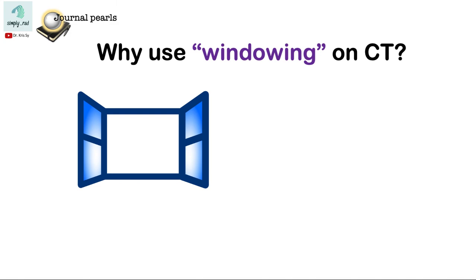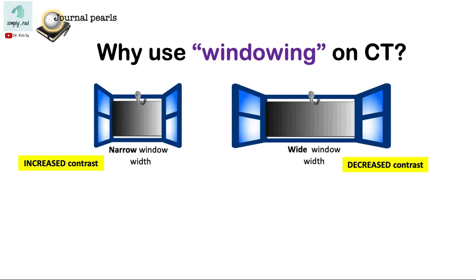So why use windowing? Changing the windowing allows us to change the contrast and therefore highlight the abnormality. Failing to use the proper window may lead us to miss out findings which could have been made more obvious using the correct window.